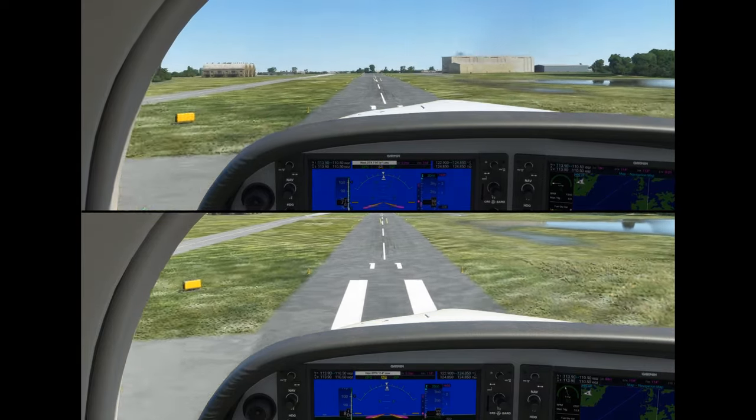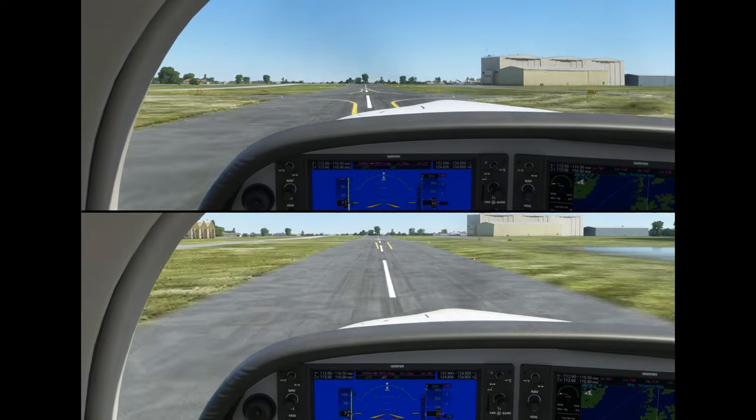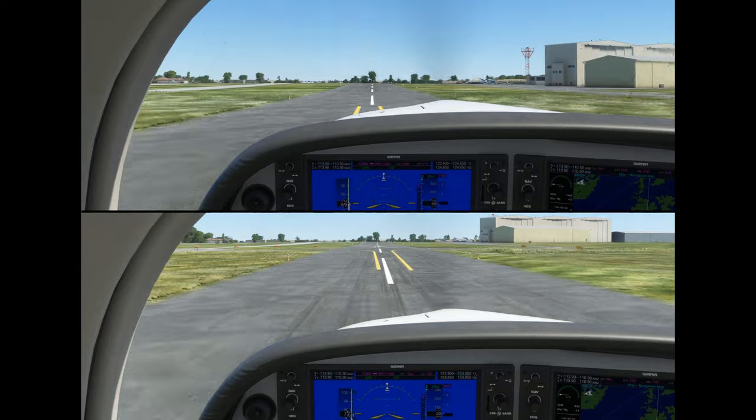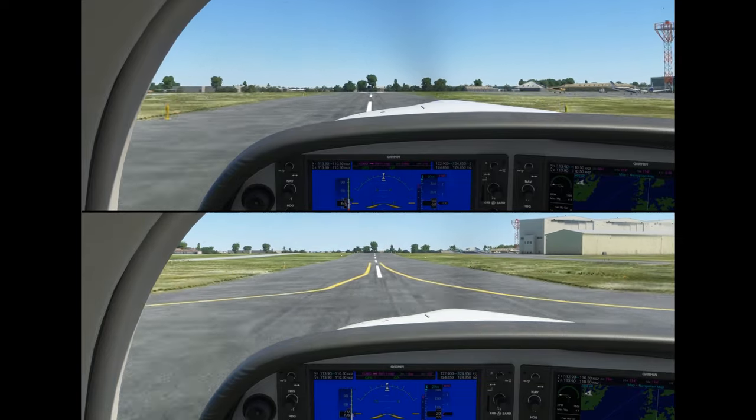Without the added drag from the flaps, it takes longer to bleed off the extra energy, and we'll need to stand on our brakes just to bring the aircraft to a stop, using up almost all of the short runway.